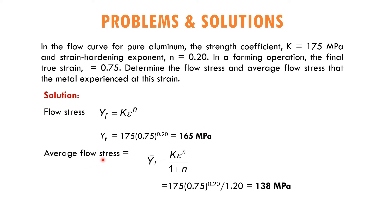For the average flow stress, we divide by 1 plus n. We already have 165 MPa from the flow stress calculation, so we divide by 1 plus 0.2, which is 1.2, giving us 138 MPa.